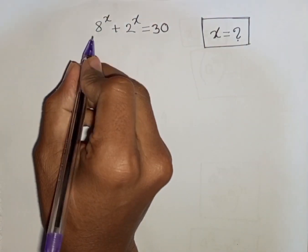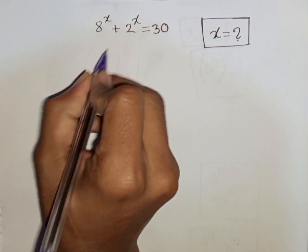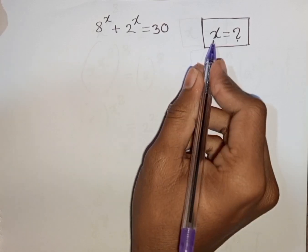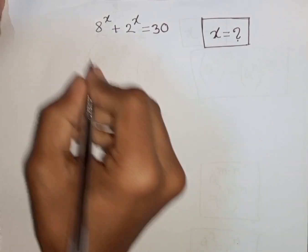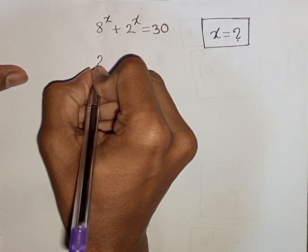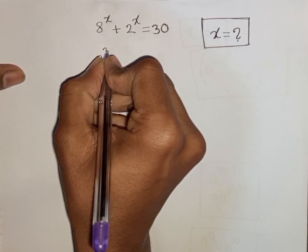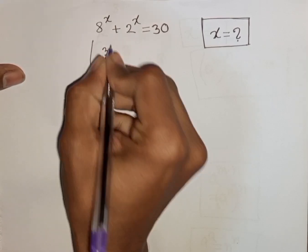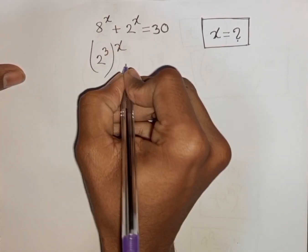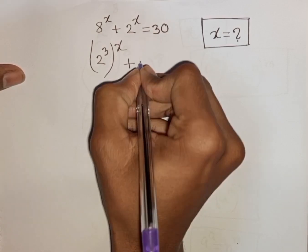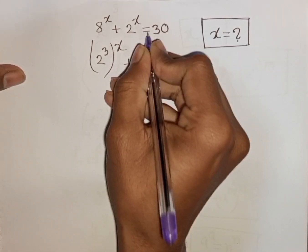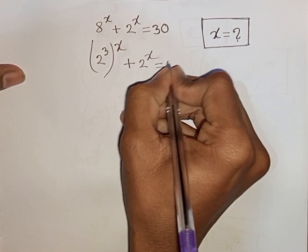How to solve 8 power x plus 2 power x is equal to 30. Find the value of x. We have 8 power x, which is the same as 2 power 3, bracket power of x, plus 2 power x is equal to 30.